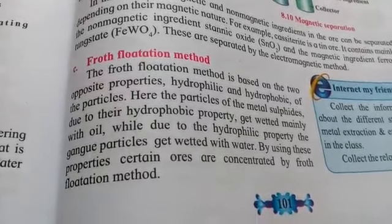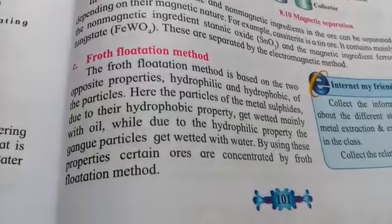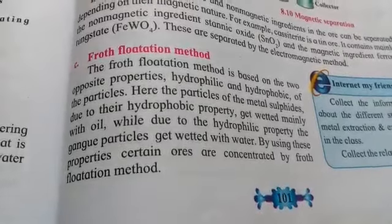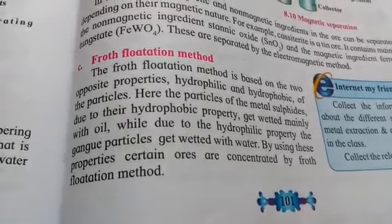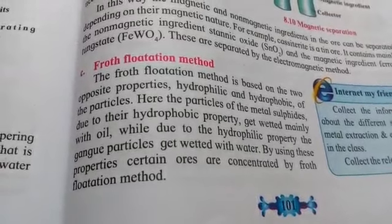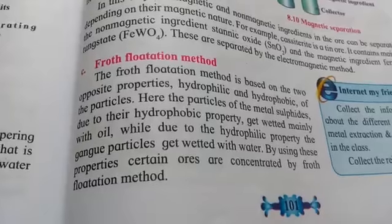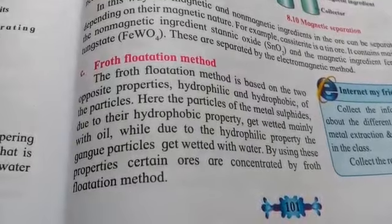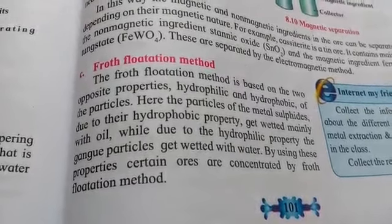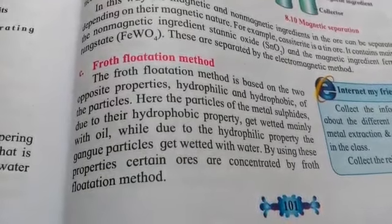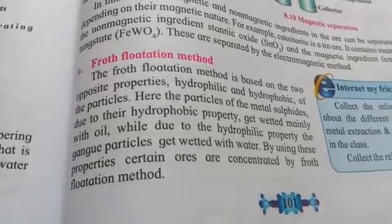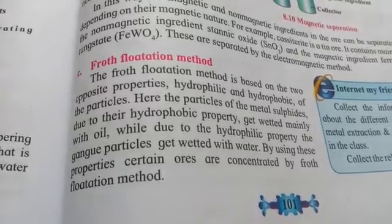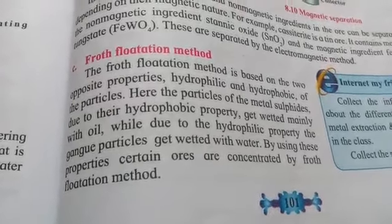We shall study the froth flotation method. This method is based on two opposite properties: hydrophilic and hydrophobic. Hydrophilic means water-loving and hydrophobic means water-hating. This froth flotation method is mainly used for sulphide ores. The metal sulphides are hydrophobic — they will not be attracted towards water and will move away from it. Whichever gangue particles or impurities are present are hydrophilic, so they will be easily attracted towards and wetted by water.